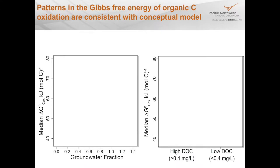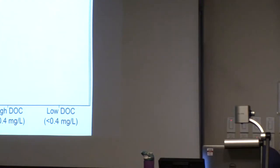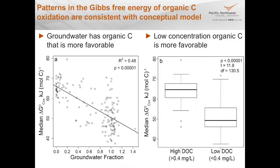We took samples from across the field system — the river, the aquifer, and mixing zones — and calculated the groundwater fraction (zero to one) in each sample. Using FT-ICR we calculated the median Gibbs free energy per sample. The trend is clear: moving toward surface water, you get less and less favorable carbon; moving toward groundwater, you get more and more favorable carbon. Similarly, high dissolved organic carbon (DOC) concentration is associated with unfavorable carbon, while low DOC concentration is associated with more favorable carbon.